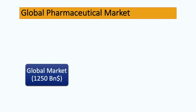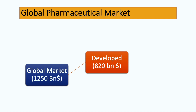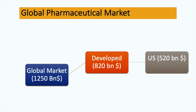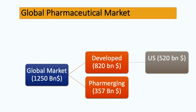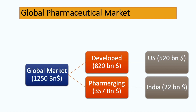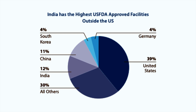The overall global pharmaceutical market is $1,250 billion. The global market includes the developed market, which controls $820 billion of revenue. The most important player in the developed market is the United States, which accounts for $520 billion. Now, the pharmerging market — basically emerging countries like India — has India's market share at $22 billion, while the pharmerging market overall is around $350 billion. If we contrast the size of the USA and India, the USA is around 25 times bigger than the Indian pharmaceutical market. That is the reason why the US is very important for India. India has the highest number of USFDA-approved facilities outside the US. Standalone, India has 12% of global USFDA-approved facilities.